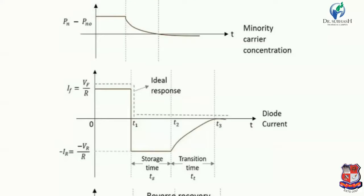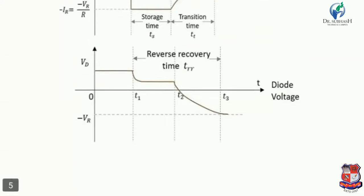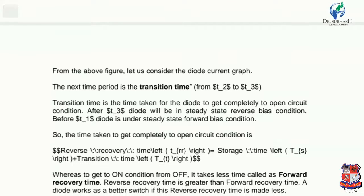Now let us discuss different timings: storage time and transition time. Transition time is the time required to go from one state to another state — the time during which a transient response occurs. This time is called transition time. Reverse recovery time is the time interval taken by the diode when it moves from forward state to reverse state. The total time T is divided into different categories: T1, T2, T3. Transition time is the time taken for the diode to get completely to open circuit condition.